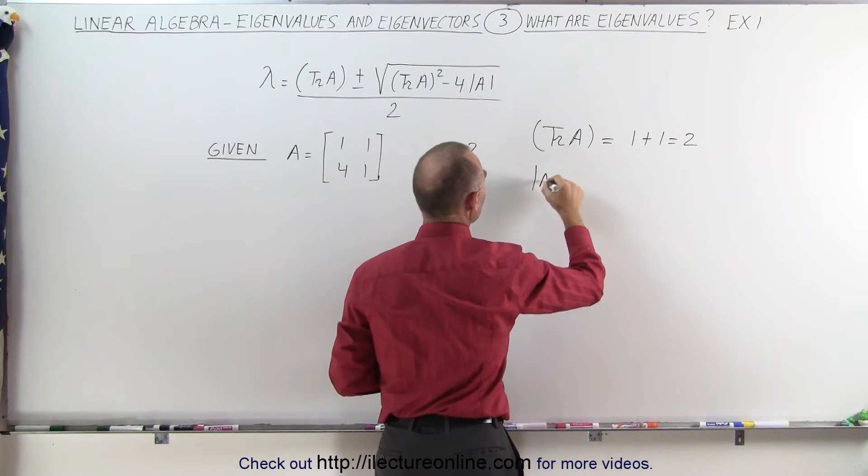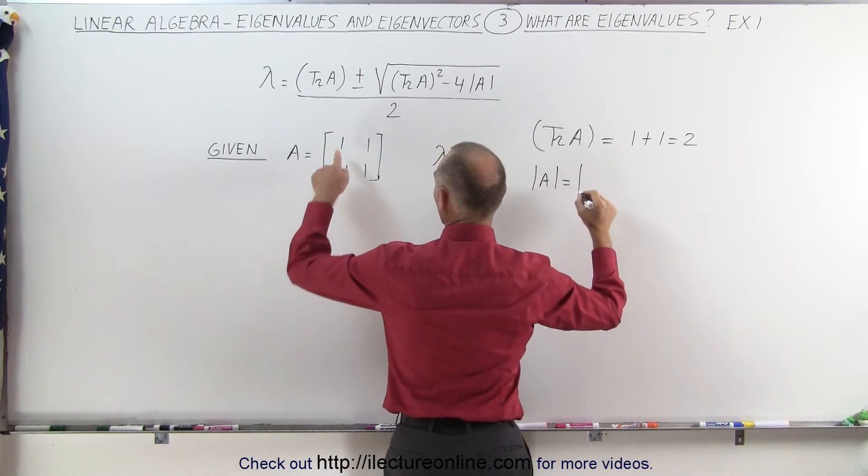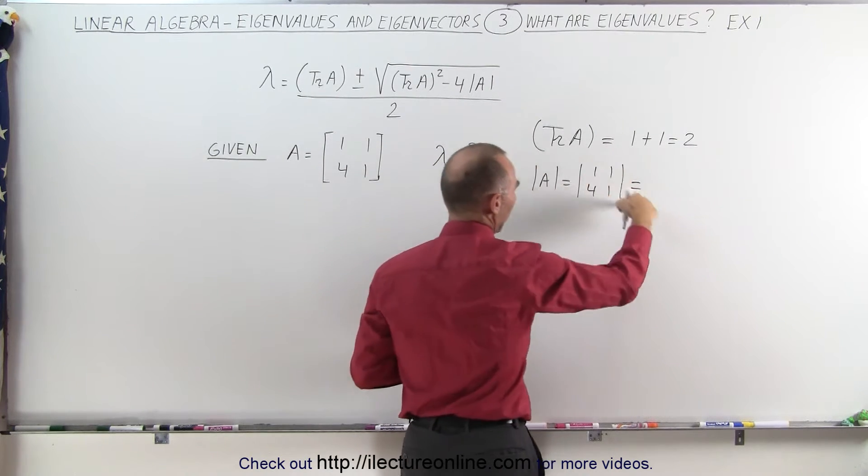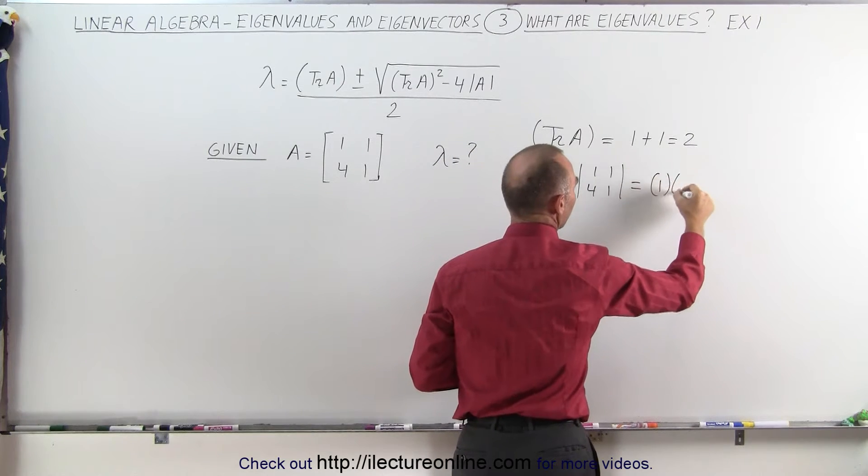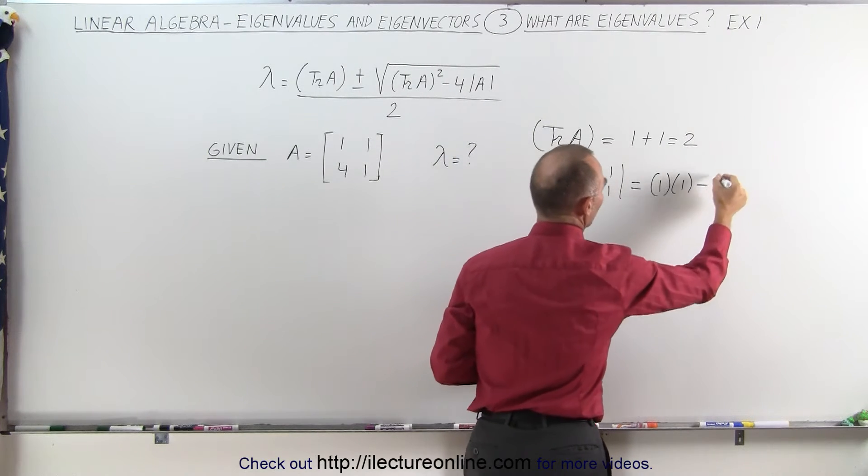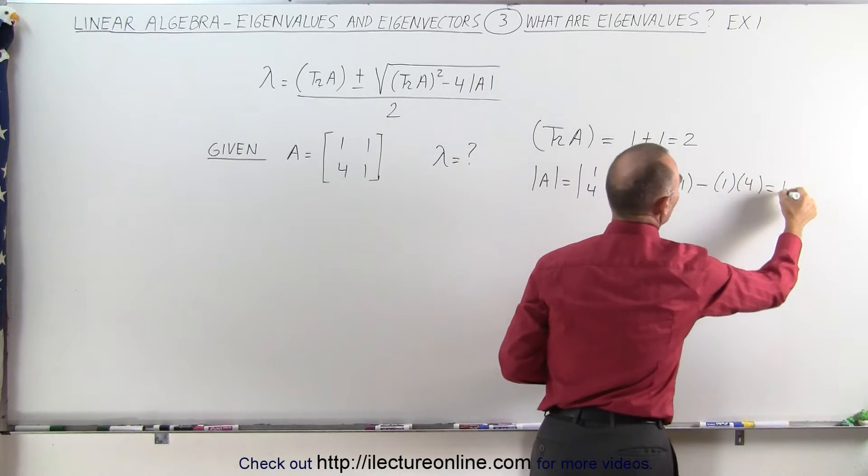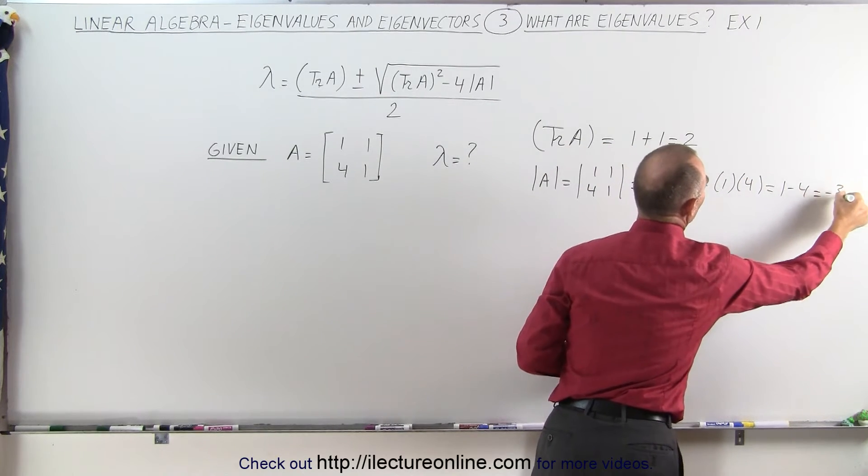The determinant of A is equal to the product of the diagonal elements minus the product of the off-diagonal elements. That would be 1 times 1 minus 1 times 4, which equals 1 minus 4, which is -3.